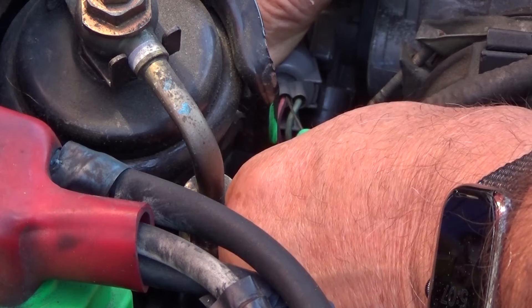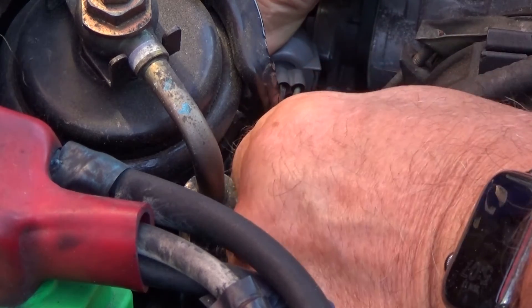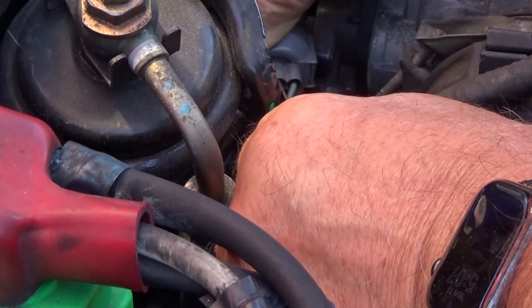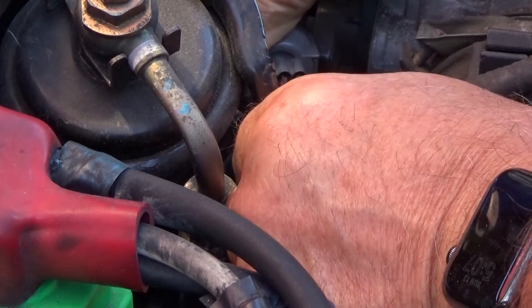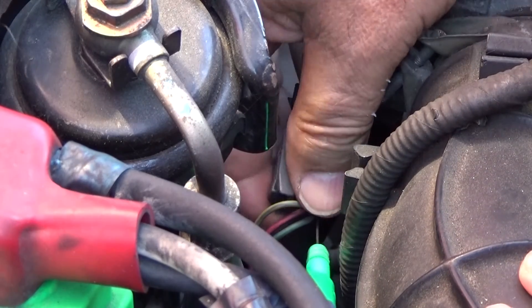On this vehicle, it is easier to unplug the throttle positioning sensor to back probe the red and black wire and then plug the connector back into the throttle positioning sensor.